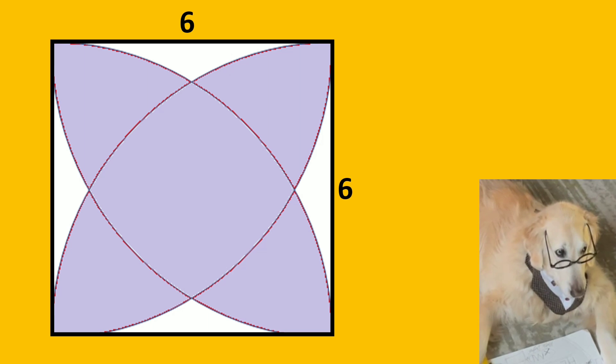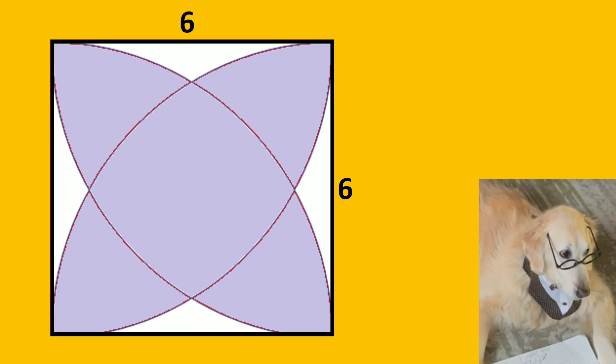We have four quarter circles that are intersecting and we have a square. The question is the shaded area.